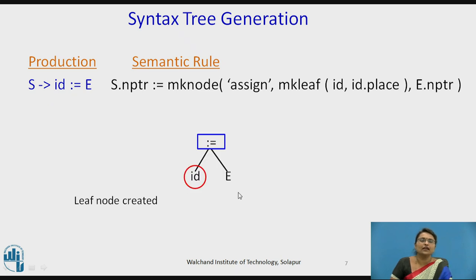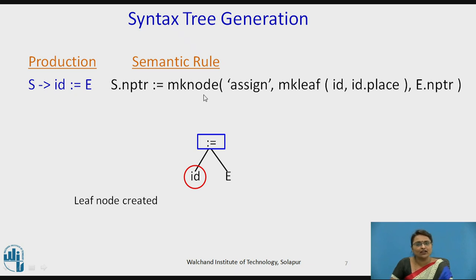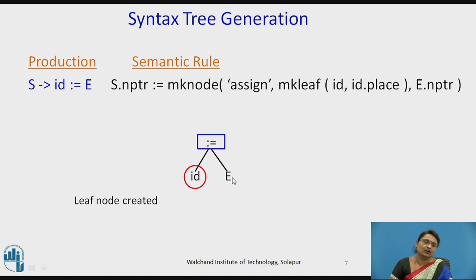Consider the production rule S producing ID assigns to E and its semantic rule. It calls the make_node function where assign is the node generated. At the left side, make_leaf is called — so for ID it creates a leaf node, and for E, since it is a pointer, it is an internal node, not a leaf node. The left node is created by make_leaf.